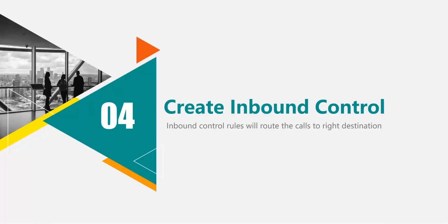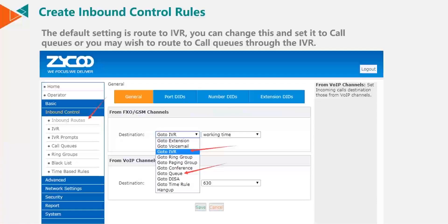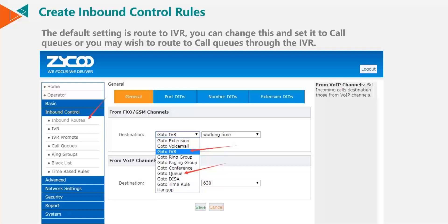The next thing we need to do is create an inbound rule. Inbound rules allow calls to go to the right destination. We do this again in the PBX — go to inbound control, inbound rules. By default, it's set to IVR, but we can change this to go to queue.